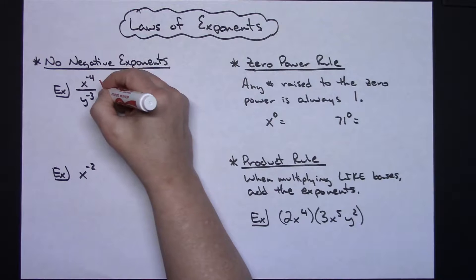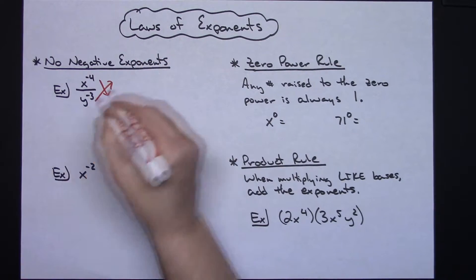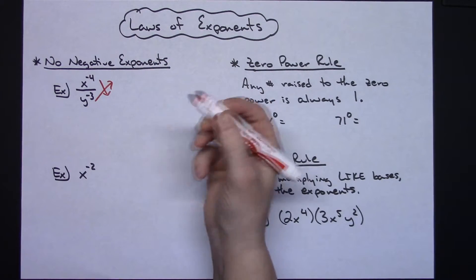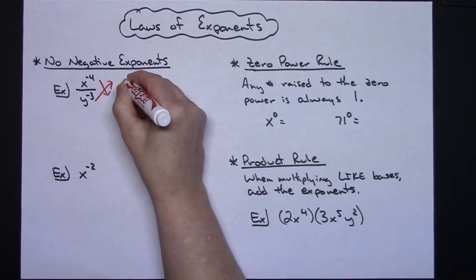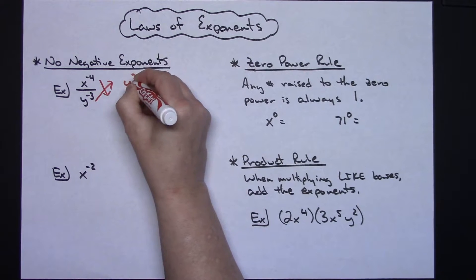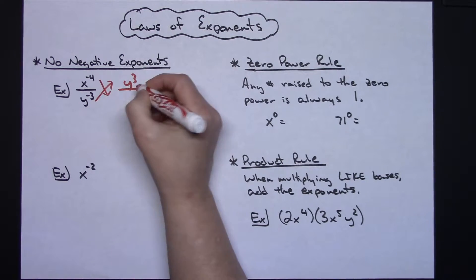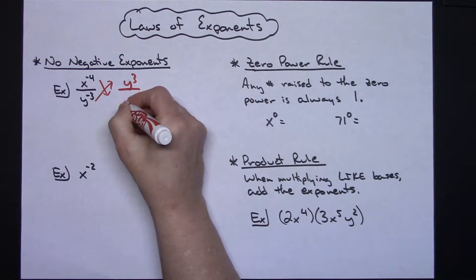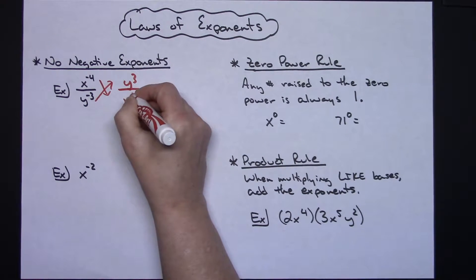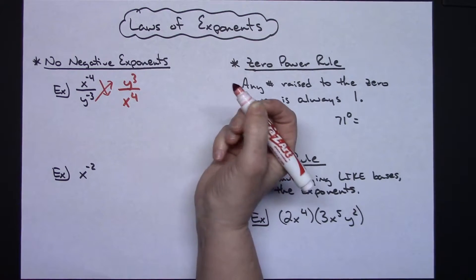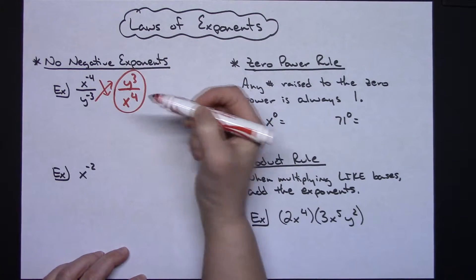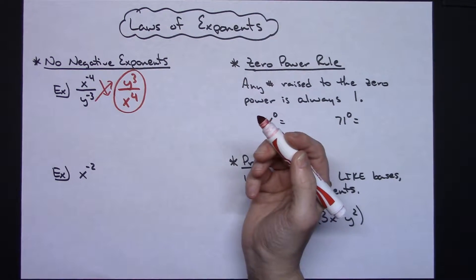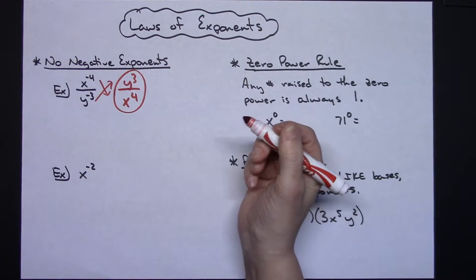We get rid of all negative exponents by moving them to the opposite locations. So in this example I would have a y to the positive 3 in the top and an x to the positive 4 in the bottom. And that's just removing those negative exponents.